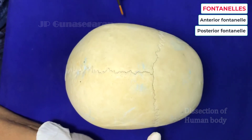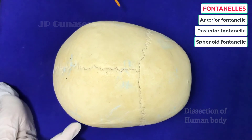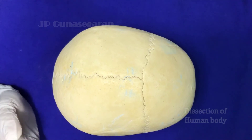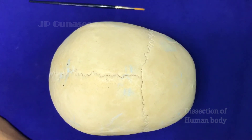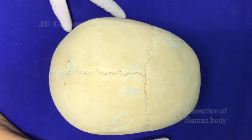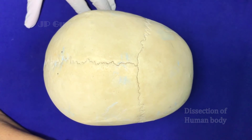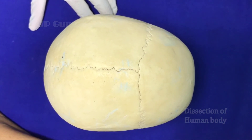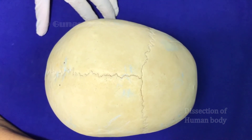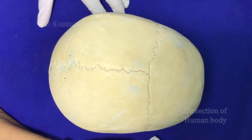Anterolaterally, at the corner of the parietal bone, we have the sphenoid fontanel. Similarly, on the posterior side, we have the mastoid fontanel. Being unossified, these fontanels help in moulding of the skull during labour and also help in the development of the brain to some extent. Most of these fontanels close by three to four months, except the anterior fontanel, which closes between one and a half to two years. These fontanels also serve as a guide for noting the intracranial pressure in the newborn.